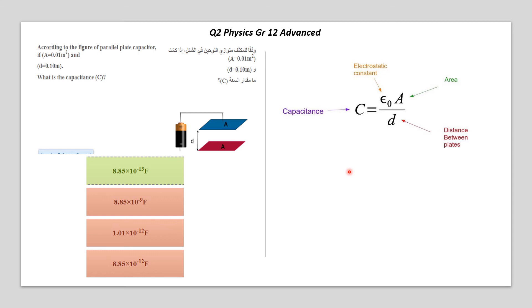So, simple and direct equation, we only replace the figures, and by simple calculation on the calculator, the answer will be 8.85 by 10 to the power of minus 13 Farad. Also, in this case, the first answer is correct.